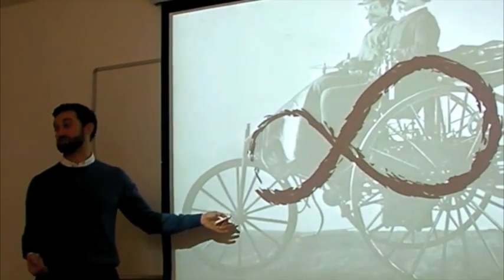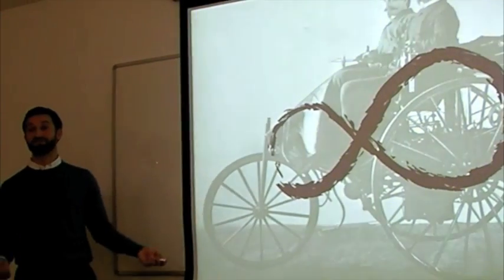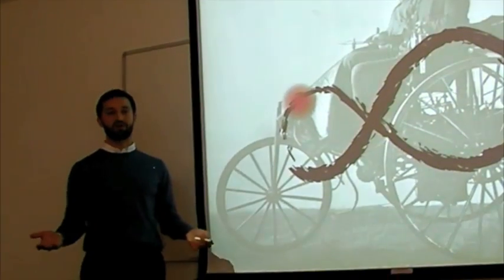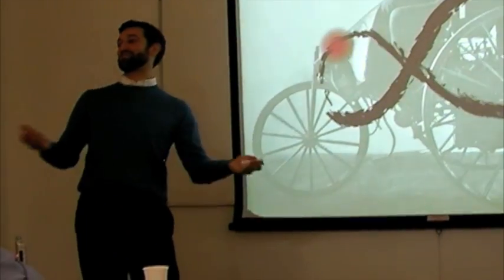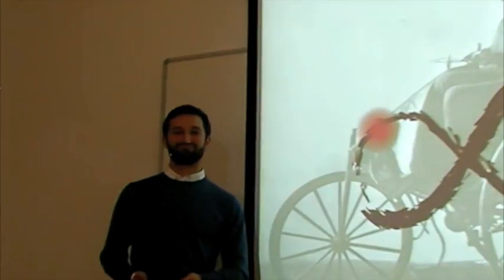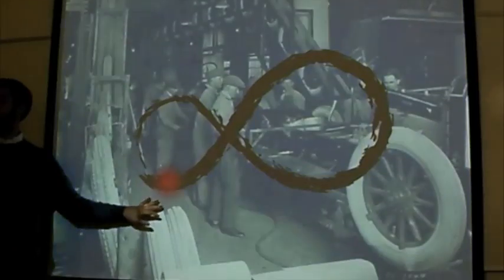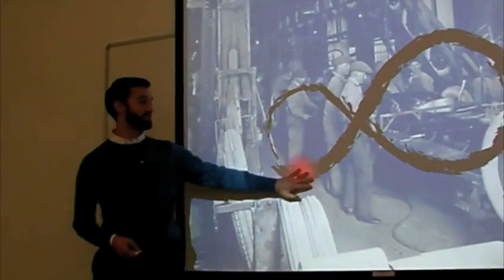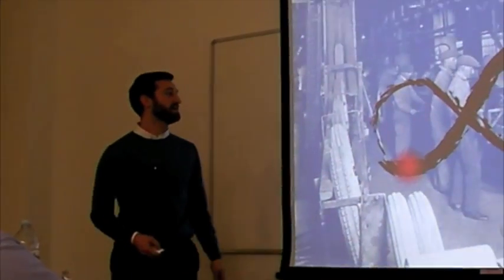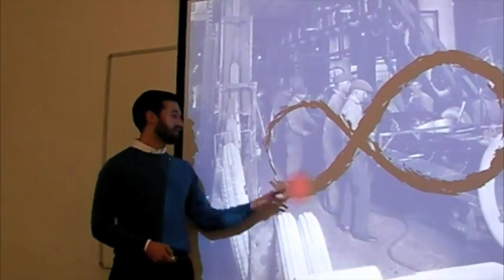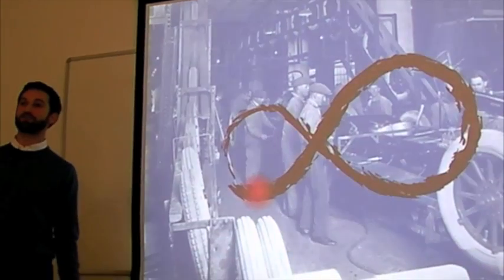This type of process happens in social systems as well. Take the car industry for example. The very first automobiles were basically created by tinkerers in their garage — aficionados who were passionate about cars. At the time, nobody thought much of it. But by producing cars in this reorganization phase where they were able to test out very cheaply a variety of different strategies, they found there was a market for it. In the early days of car manufacturing, a variety of different manufacturing plants and competing companies came into play, and then over time they all fought each other out — some failed, others succeeded.